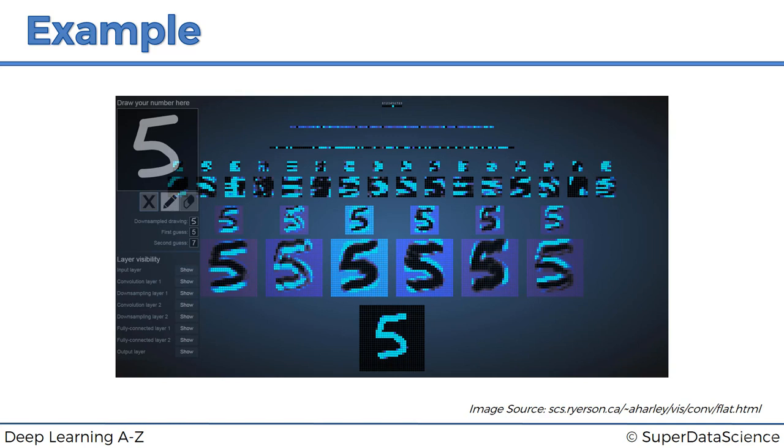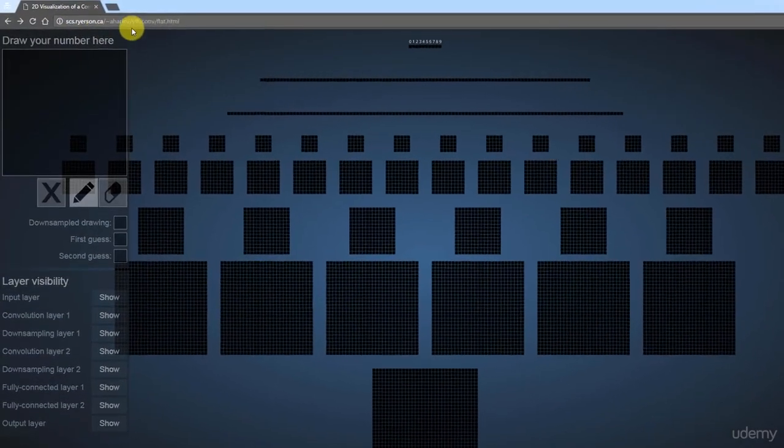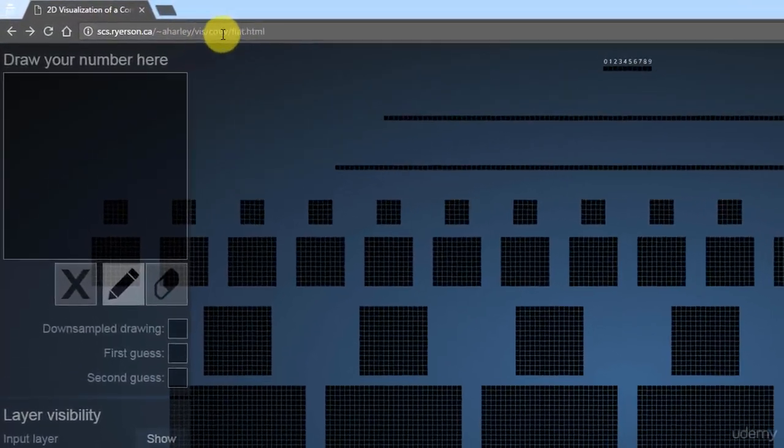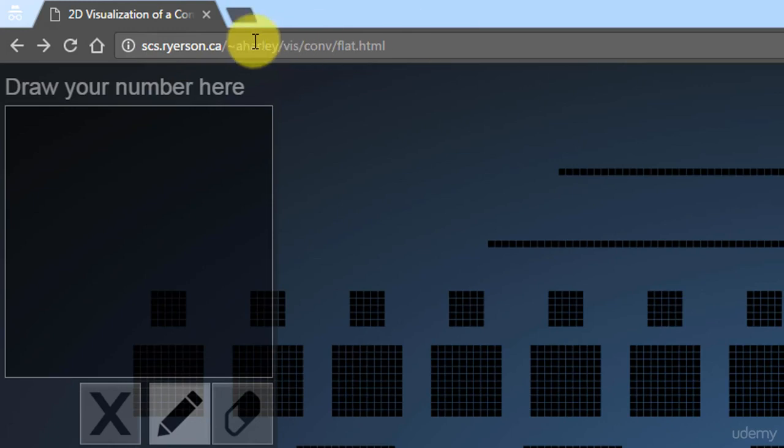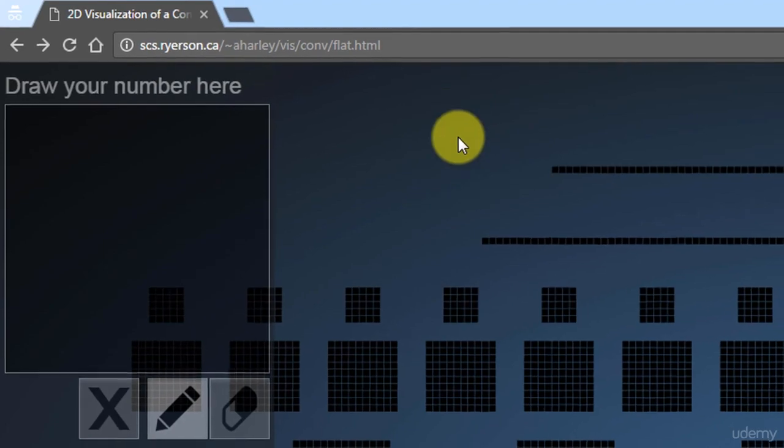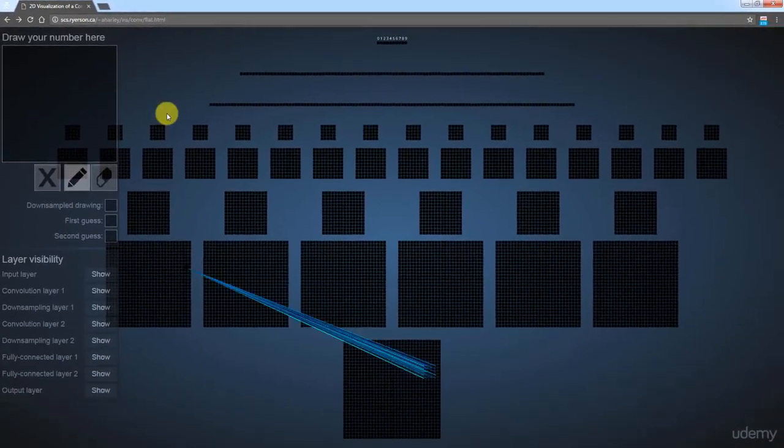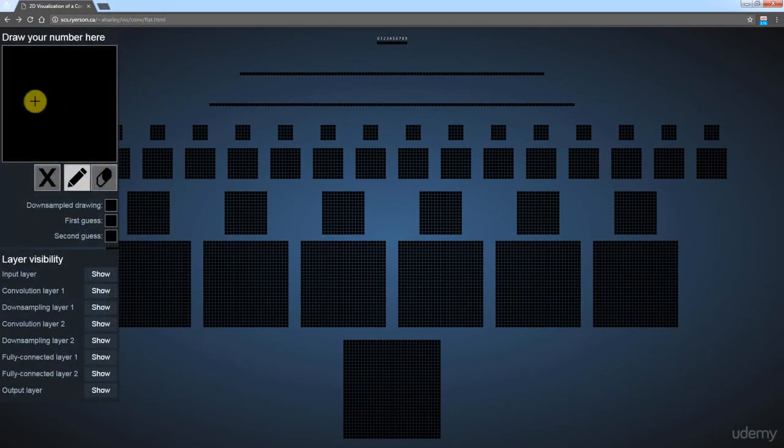So this is a screenshot I took from a tool created by Adam Harley from, well, back when he was at Ryerson University of Computer Science. And now he's at Carnegie Mellon, I think doing his PhD. It's a great tool. So let's open up, let's have a look. So you can find it, you can't actually find it through Google. You have to know the URL. It's scs.ryerson.ca and then this stuff on the end. And basically, this is exactly what we're doing, but visualized. So here you need to draw a number.